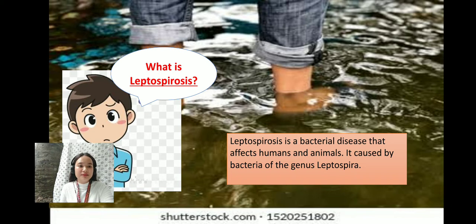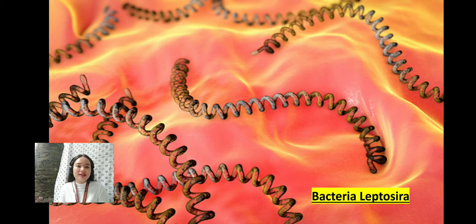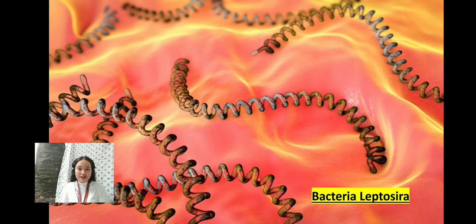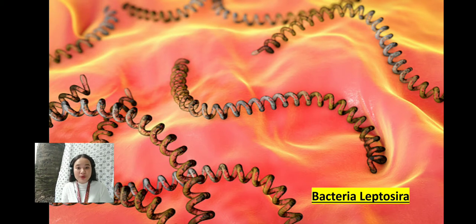This is an image of bacteria Leptospira. If you look at it, its shape is like a spiral. Leptospirosis is a rare bacterial infection we get from animals, especially from their urine. It is caused by infection with Leptospira bacteria. Take note that leptospirosis is a zoonotic disease, meaning it can be spread from animals to people.